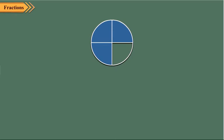Now observe this circle. It is divided into four equal parts. Out of four equal parts, three parts are shaded. Therefore, the shaded part is three fourths of the whole. We write it as three upon four, and it is read as three upon four.